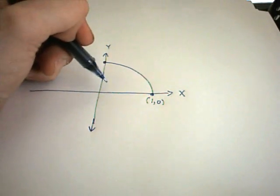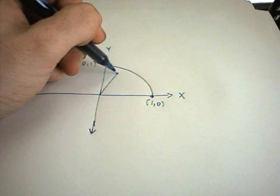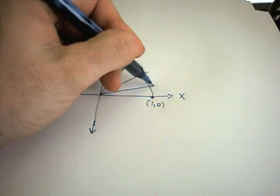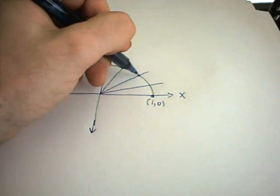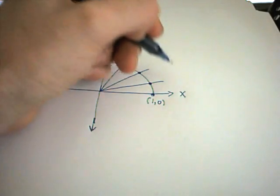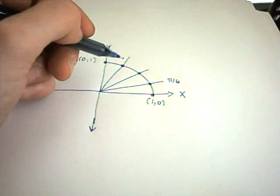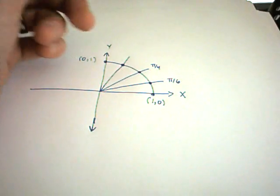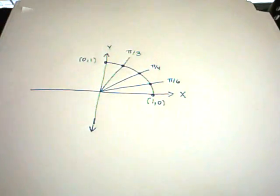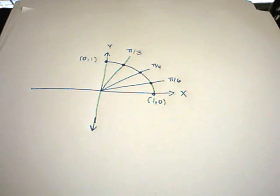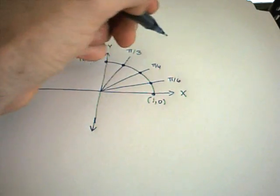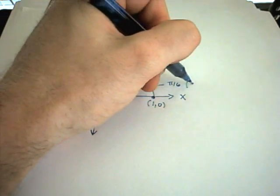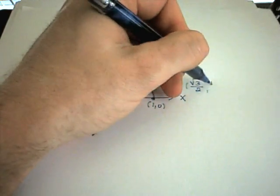The first thing we're going to do is put some angles on here. These angles are going to hit the unit circle in different places. The smallest angle corresponds to π over 6. The one in the middle corresponds to π over 4. And the biggest angle corresponds to π over 3. At π over 6, it hits the circle at the value square root of 3 over 2 comma 1 half.